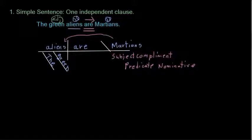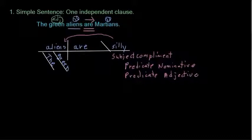Now, we can also have, in the same place, a predicate adjective. Either way, they are a subject complement. Let's change this, Martians, to something which is modifying aliens. So, let's say, aliens are silly. Now, silly is an adjective on aliens. And it is what we call a predicate adjective, but still a subject complement.